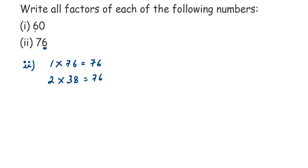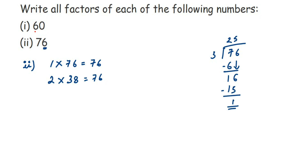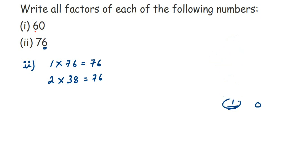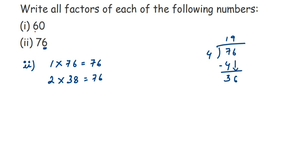Does 76 go in the 3 table? Dividing 76 by 3: 3 twos are 6, remainder 1, drop the 6 to get 16 — 3 fives are 15, remainder 1. We can't divide further, so remainder is 1, meaning 76 doesn't go in the 3 table. Next, checking the 4 table: dividing 76 by 4 gives remainder 3, drop the 6, 4 nines are 36, remainder 0. So 4 into 19 is equal to 76.